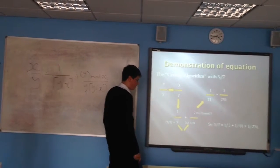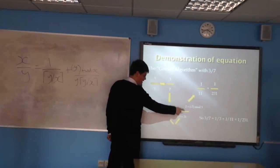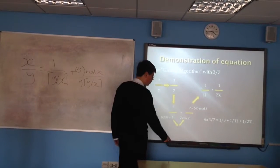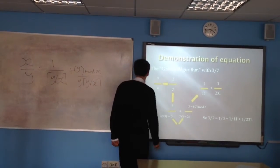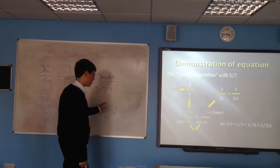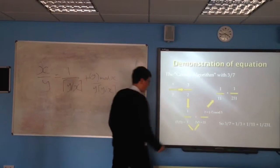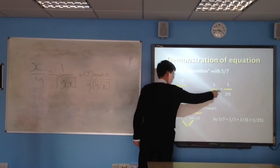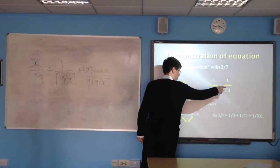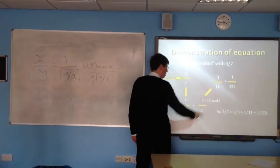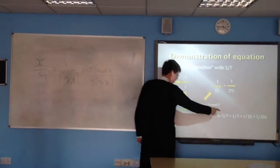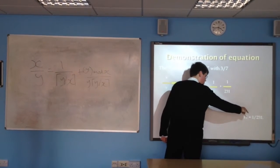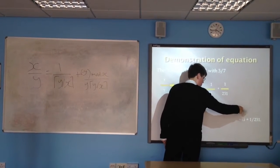Now we have 2/21, and we can't have a numerator other than 1 for Egyptian fractions. So we take 2 and 21 and apply the whole process again. We find that 2/21 equals 1/11 plus 1/231. So 3/7 equals 1/3 plus 1/11 plus 1/231.